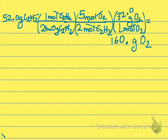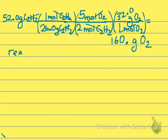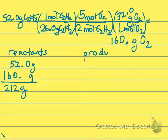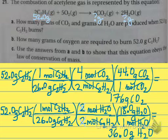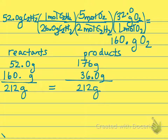Letter C says: use the answers from A and B to show that this equation obeys the law of conservation of mass. Our reactants: 52 grams of acetylene plus 160 grams of oxygen equals 212 grams. For our products: 176 grams of carbon dioxide plus 36 grams of water also equals 212 grams. So we've proven the law of conservation of mass.